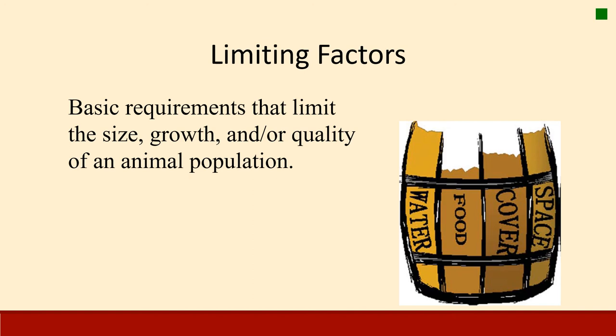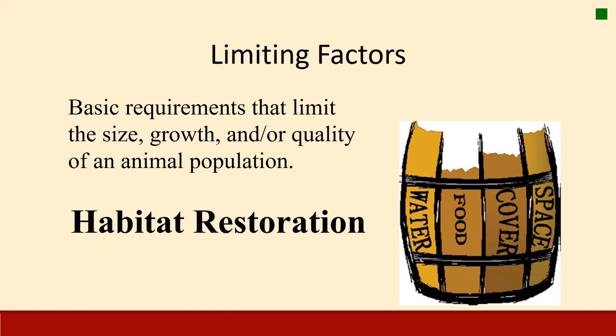Each of those four requirements — food, water, cover, and space — is a limiting factor. Without one of them, just like a barrel with a short stave, we can't have an effective habitat that meets different population needs. One career option with a range degree is restoration ecology, which focuses on habitat restoration. When restoring habitat, we consider each of these factors to make sure they are intact so animals return to the area. We want sufficient food, available water, adequate cover, and appropriate space considering home range and social interactions, creating a good habitat for multi-species on rangelands.